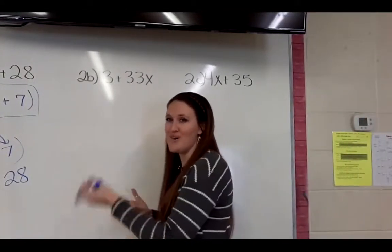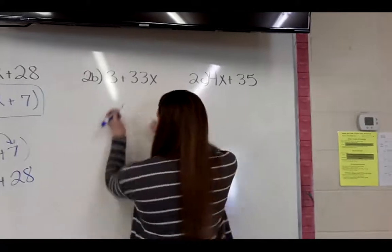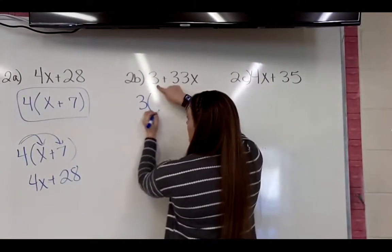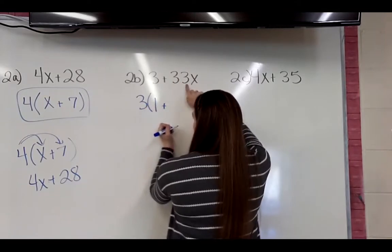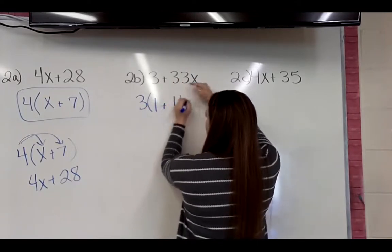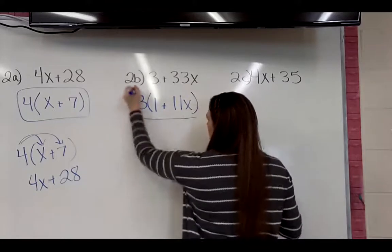So if I take 3 out of that, well, 3 divided by 3 is 1, plus 33x divided by 3 is 11x. That would be our answer on that one.